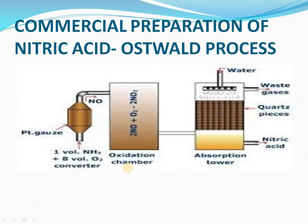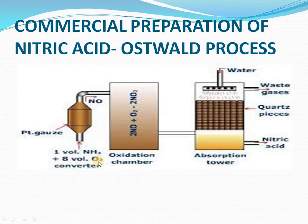Previously we discussed lab preparation of nitric acid using sodium nitrate and concentrated sulfuric acid. Now we are going to discuss producing a large amount of nitric acid — this process is known as the Oswald process. Commercial means large-scale production in industries. The reactants here are ammonia and oxygen. We pass these reactants through a catalytic chamber containing a platinum gauze. Platinum acts as a catalyst, converting these two gases into NO — nitric oxide.